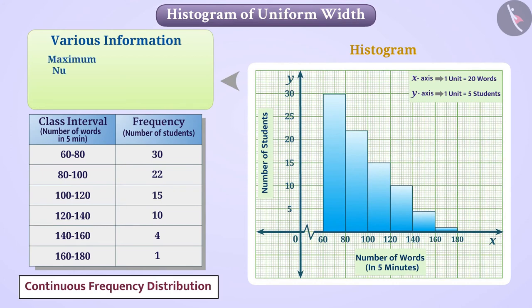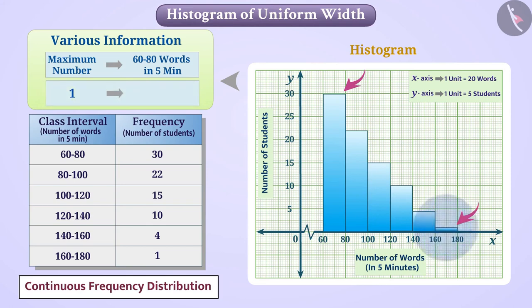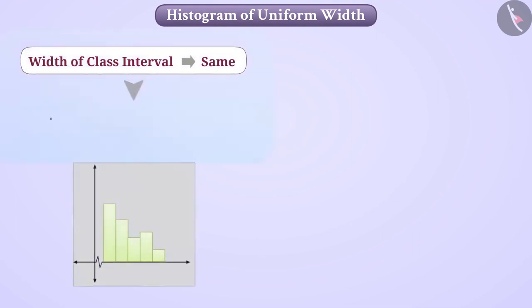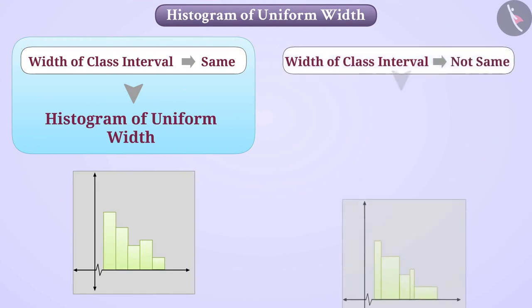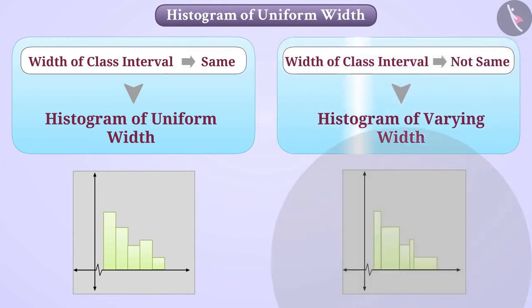The maximum number of children who can type 60 to 80 words in 5 minutes. We can see that only one student types 160 to 180 words in 5 minutes. When the class intervals have the same width, we get the histogram of uniform width. If the width of the class interval is not the same, then we get a histogram of varying width, which we will discuss in the next video.